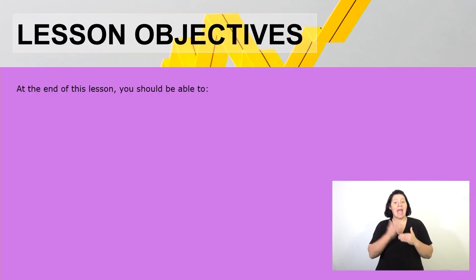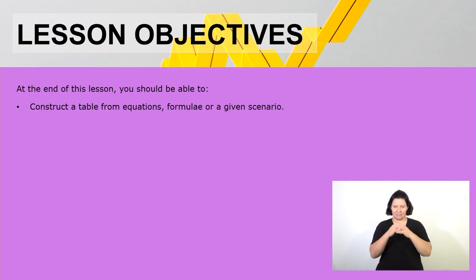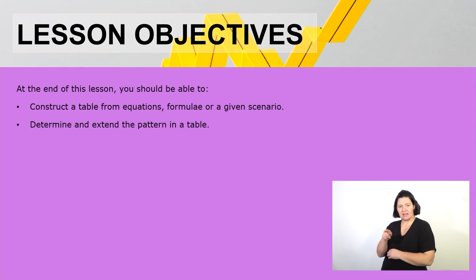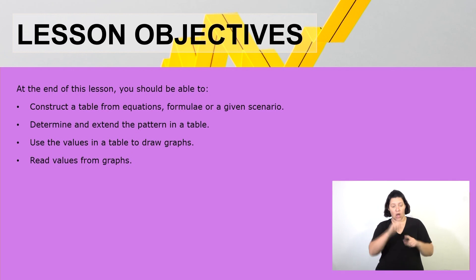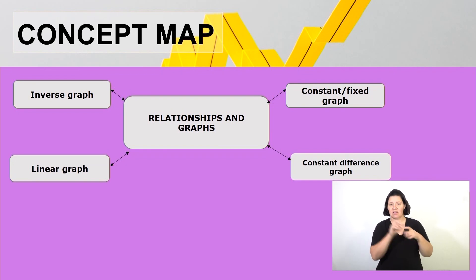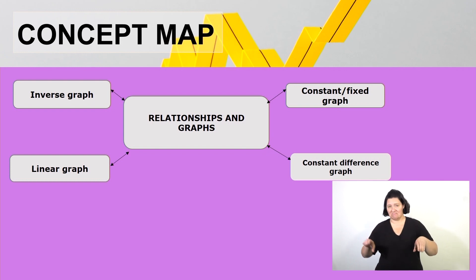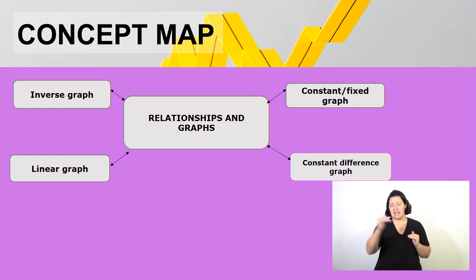At the end of this lesson you should be able to construct a table from an equation, a formula or a given scenario, determine and extend the pattern on a table, use the values in a table to draw graphs, and read values from the graphs. The topic is relationships and graphs. We have divided it into four sections: the constant fixed graphs, the constant different graphs, the linear graph, and the inverse graph.